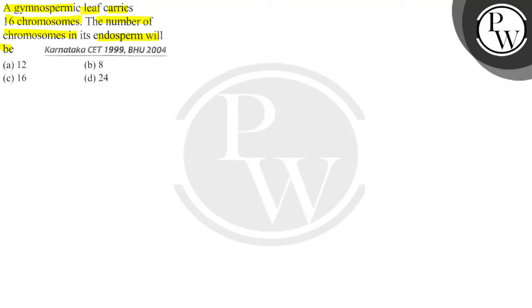So we are talking about a gymnosperm leaf with 16 chromosomes. The number of chromosomes in its endosperm will be how many? Option A is 12, option B is 8, option C is 16, and option D is 24.